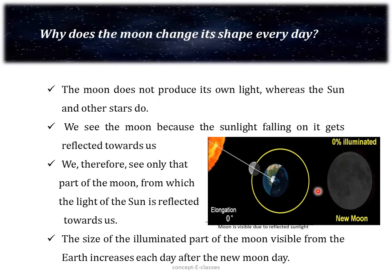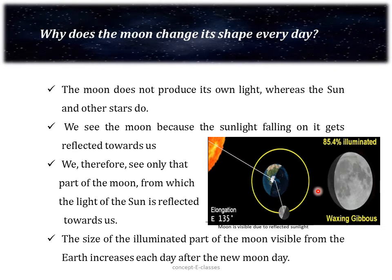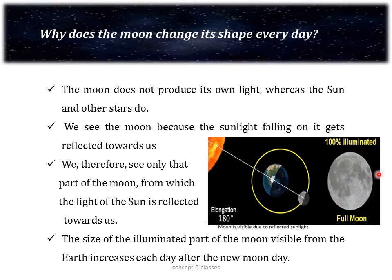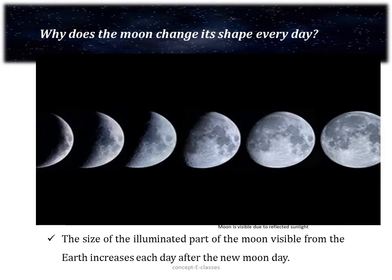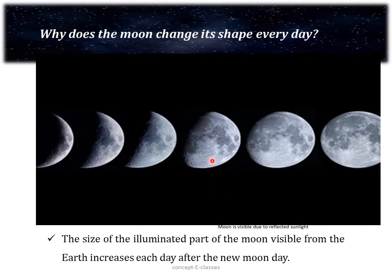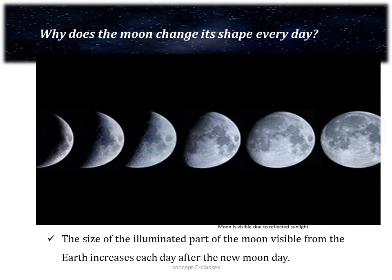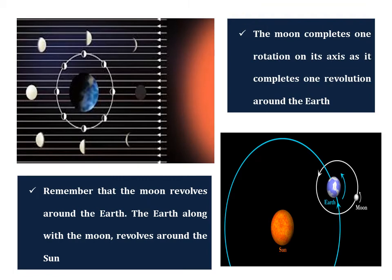On the full moon day, the moon receives full light from the sun and reflects it fully, so we are able to see the full shape of the moon. The size of the illuminated part of the moon visible from the earth increases each day after the new moon day. This is the position of the moon in its orbit and its corresponding phases — we can see the new moon, the full moon, the crescent moon and all the different phases.